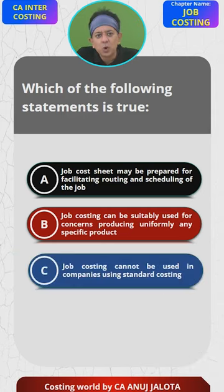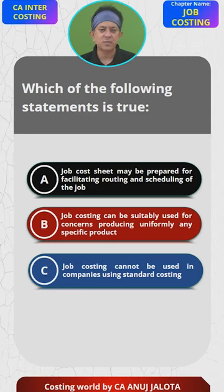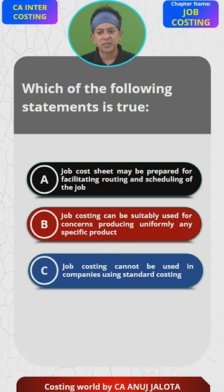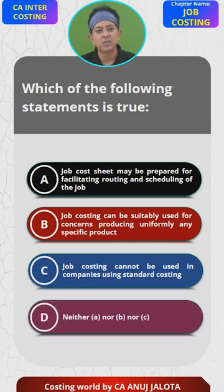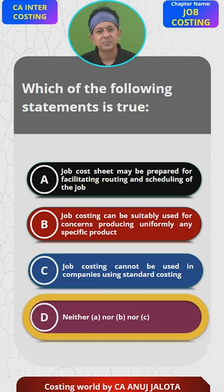Option C: Job costing cannot be used in companies using standard costing. In fact it can be used. Standard costing gives you targets — you should be incurring this much — and you can have standards for a certain job as well. Unlike absorption costing and marginal costing which are mutually exclusive, standard costing is a technique to know if you are overspending or underspending. So job costing can always be used with standard costing. Since A, B, and C are all not true, the answer is D — none of the above.